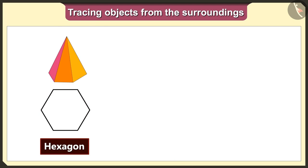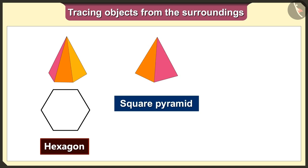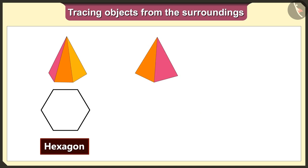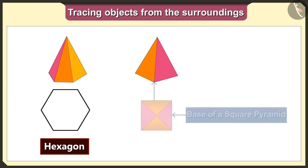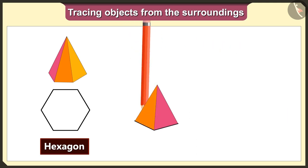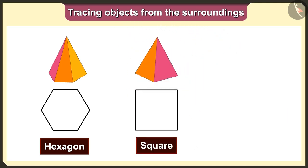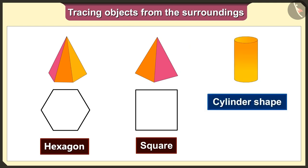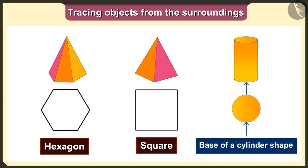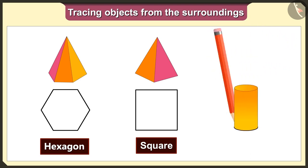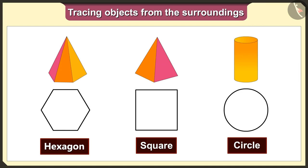So when we keep this hexagon pyramid on paper and trace it, we will get the hexagon shape. Now we will trace the square pyramid. The base of the square pyramid is a square, so we will get a square shape when we trace this pyramid. This is a cylindrical shape — the base of a cylinder is a circle, so we will get a circle shape when we trace the cylinder.